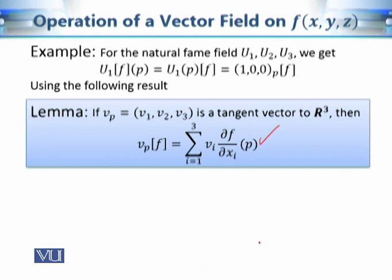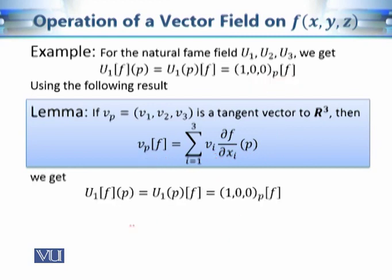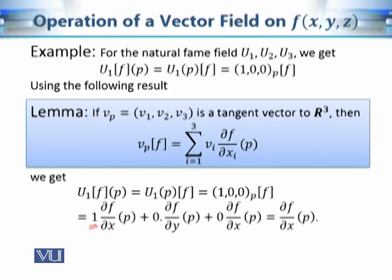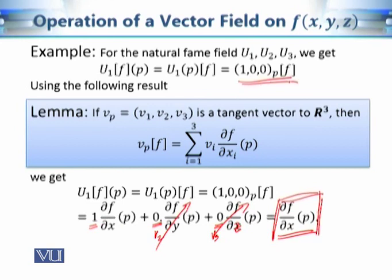Using the lemma proved in our previous discussion — whose proof was left as an exercise — we have the directional derivative equal to the sum vᵢ · (∂f/∂xᵢ) at point p. Applying this lemma: v₁ = 1, v₂ = 0, v₃ = 0, so we get 1·(∂f/∂x) + 0·(∂f/∂y) + 0·(∂f/∂z) at point p. Since the last two terms are zero, we get ∂f/∂x at point p. So if we choose a direction parallel to the x-axis, the directional derivative is simply the partial derivative of f with respect to x.